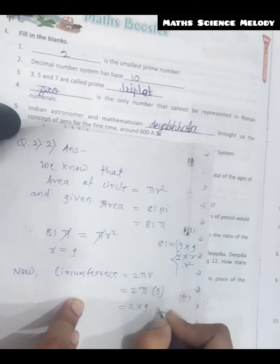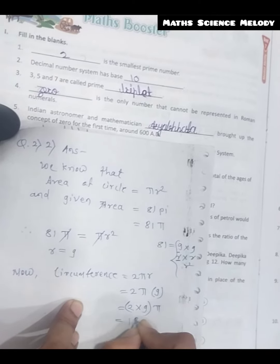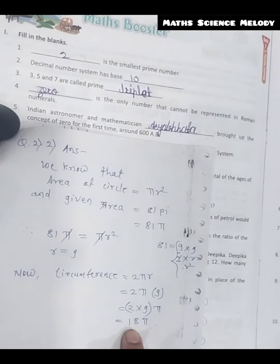Therefore, 2 multiply by 9π, which equals 18π. This is the required answer. Okay, thank you.